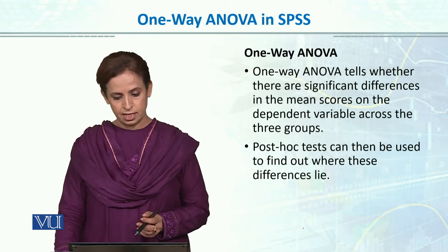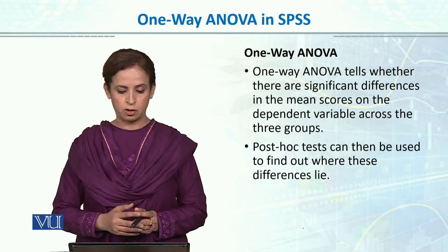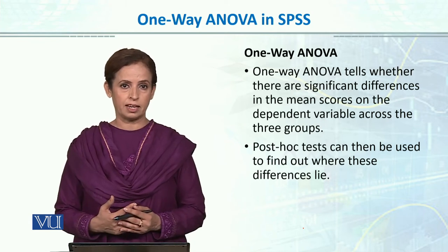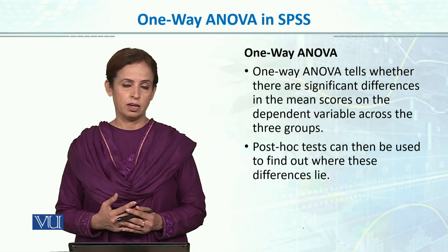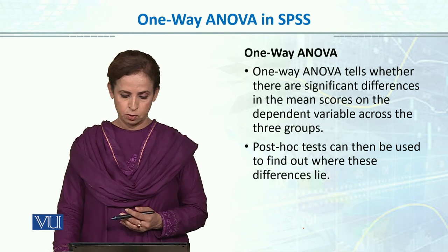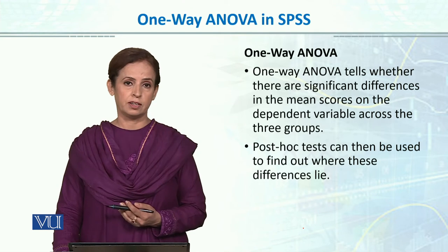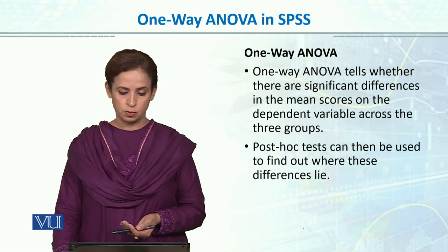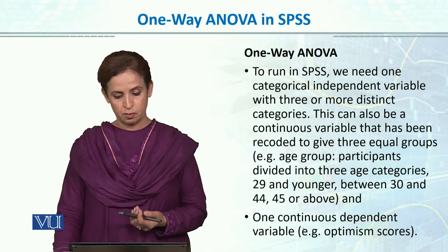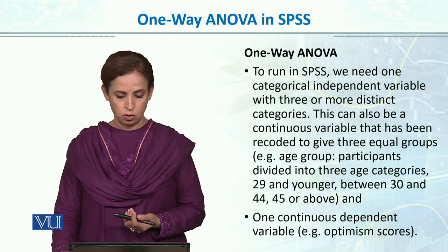One-way ANOVA tells whether there are significant differences in the mean scores on the dependent variable across the three groups — whether the three groups are the same or different — by utilizing the variability or variance in the three groups. Post-hoc tests can then be used to find out whether there are further differences. In SPSS, we need one categorical independent variable with three or more levels and one continuous dependent variable.